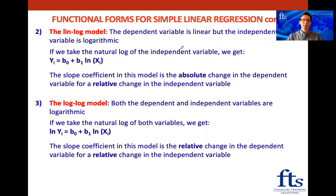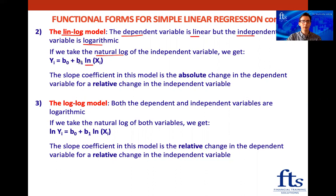For the lin-log model, the dependent variable is linear — it comes first — and the independent variable is logarithmic. We take the natural log of the independent variable. The slope coefficient b1 here represents the absolute change in the dependent variable, since the dependent variable is in its normal form, for a relative change in the independent variable, because we have ln in front of the independent variable.